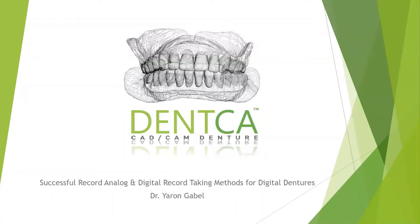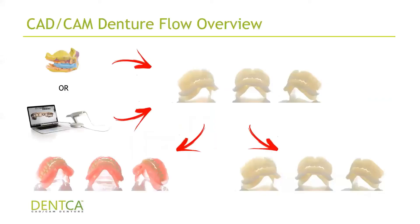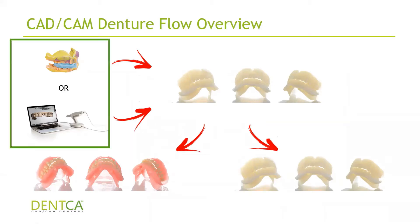Hello everyone and welcome to our fifth installment of our Denka Design web series. Today we're going to be talking about successful record analog and digital record-taking methods for digital dentures. We previously spoke about how to manufacture these dentures, how to plan ahead and create them, the nuances with Denka Design, and how to clinically deliver the try-in and the final. And now we're going to talk about impressions — going from back to front so you could understand better what you need to look out for when you take impressions rather than going from impressions all the way to final delivery.